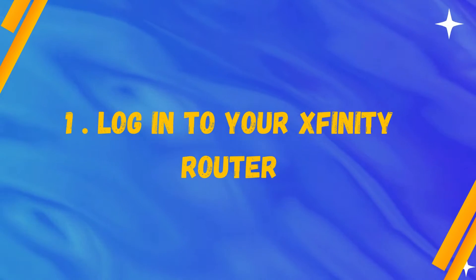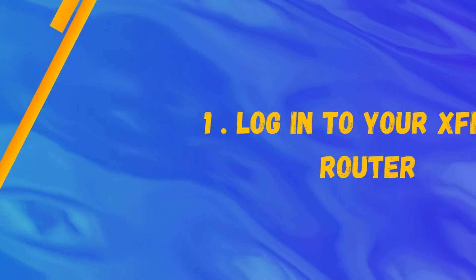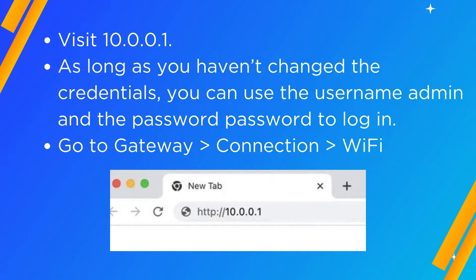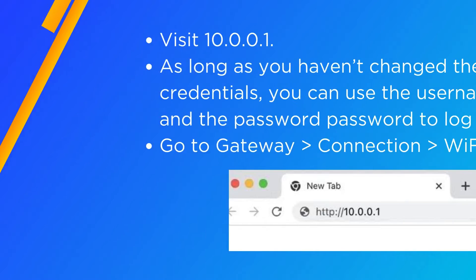Method 1: Log in to your Xfinity router. Visit 10.0.0.1. As long as you haven't changed the credentials, you can use the username admin and the password password to log in. Go to Gateway, Connection, Wi-Fi.